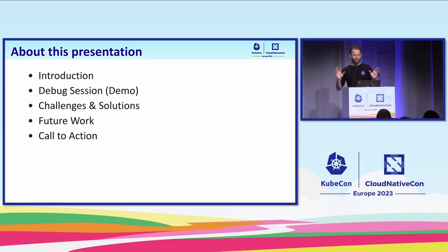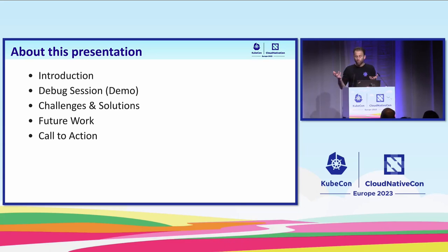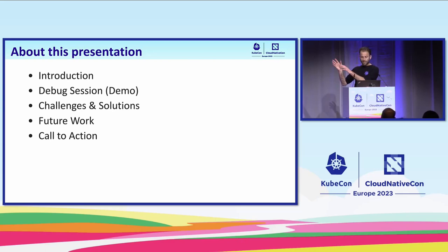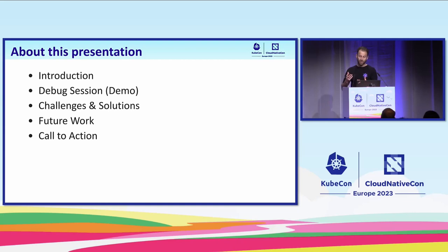Now, Kubernetes application and debug are not exact terms. When I say Kubernetes application, I mean an application that runs in one or more pods. When I say debug, I mean set breakpoints in code and step through them — it's also called interactive debugging. So first, let's quickly look at some technical details. Then I'll demonstrate a debug session. Then we'll look at the challenges that I faced and the solutions that I found. Then what work remains. And finally, I've got a call to action for all of you.